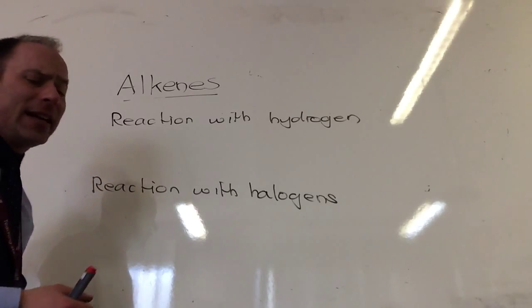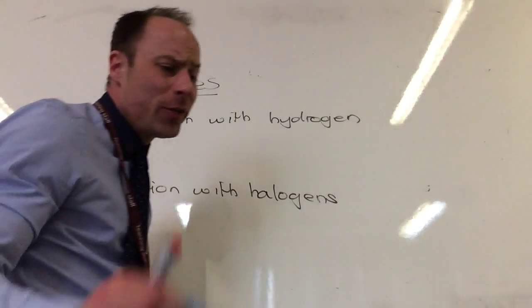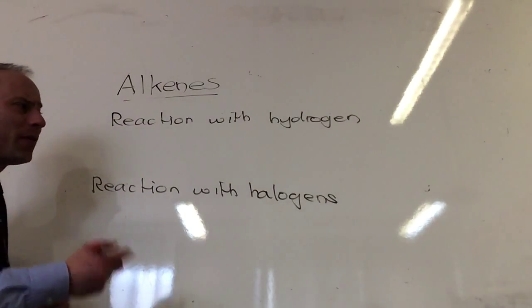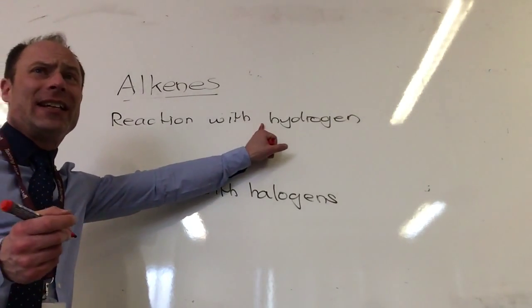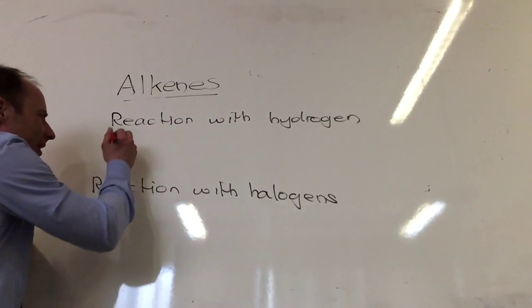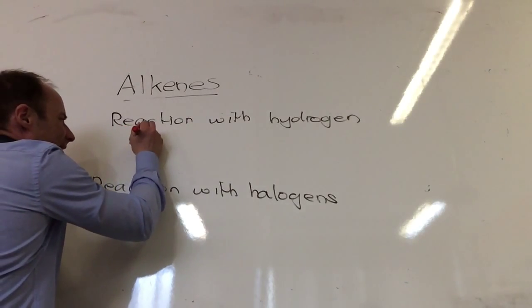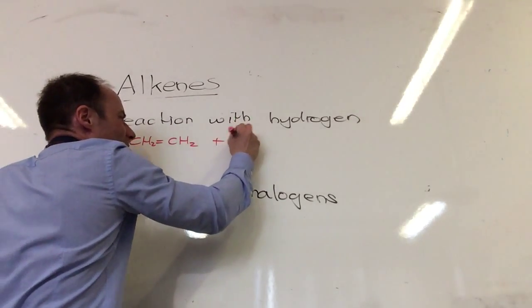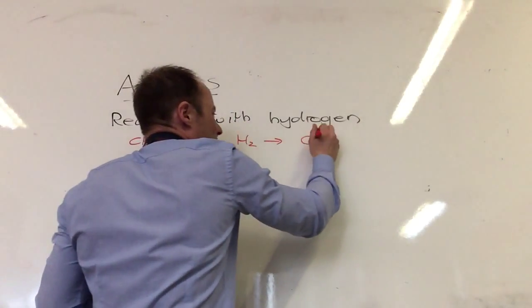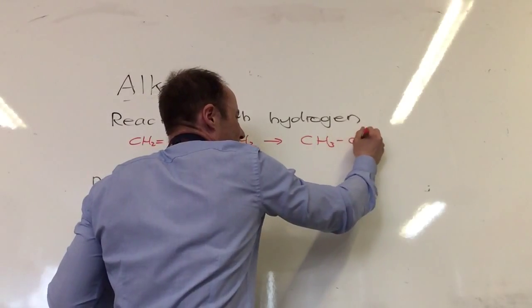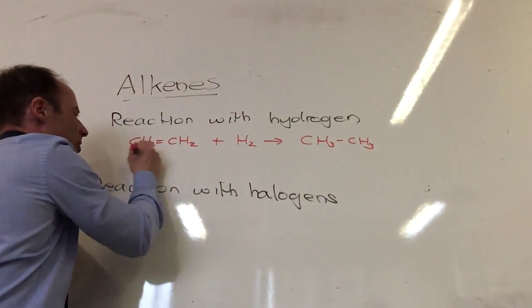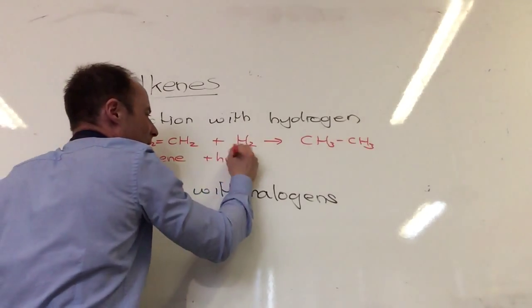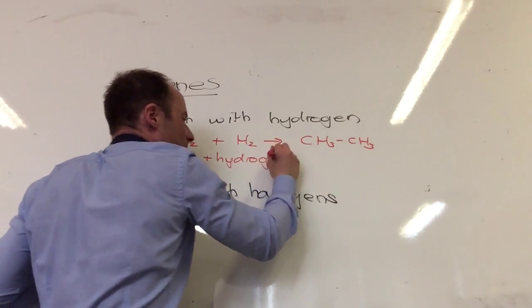The first one is a quite useful reaction. It's reaction with hydrogen and for this you need a nickel catalyst. If you take ethene, CH2 double bond CH2, you can add hydrogen to it to make ethane. You start with ethene, you add hydrogen and you remove the double bond.